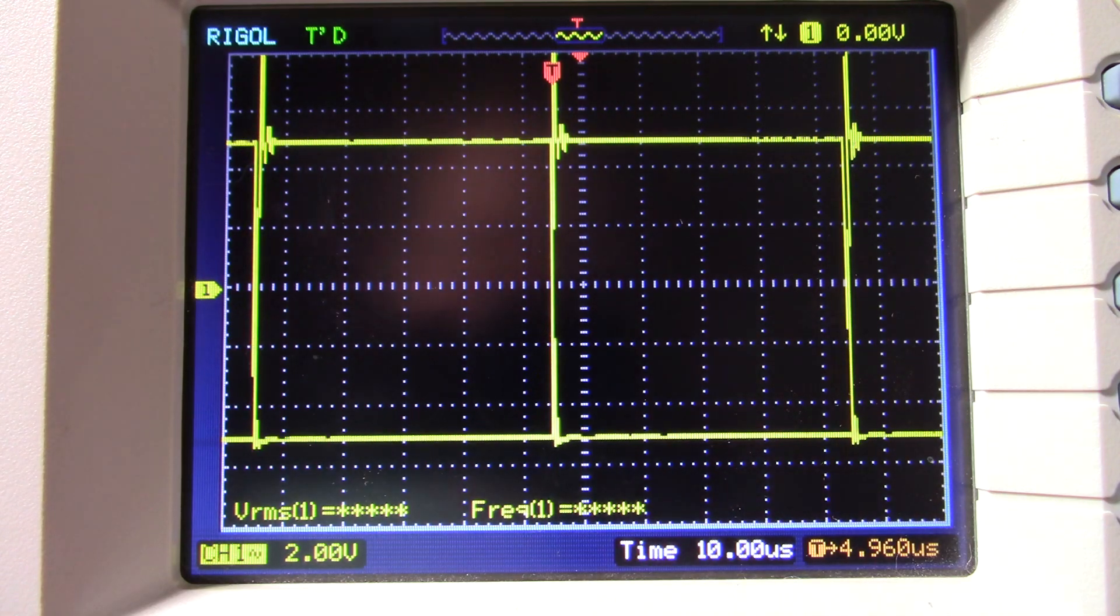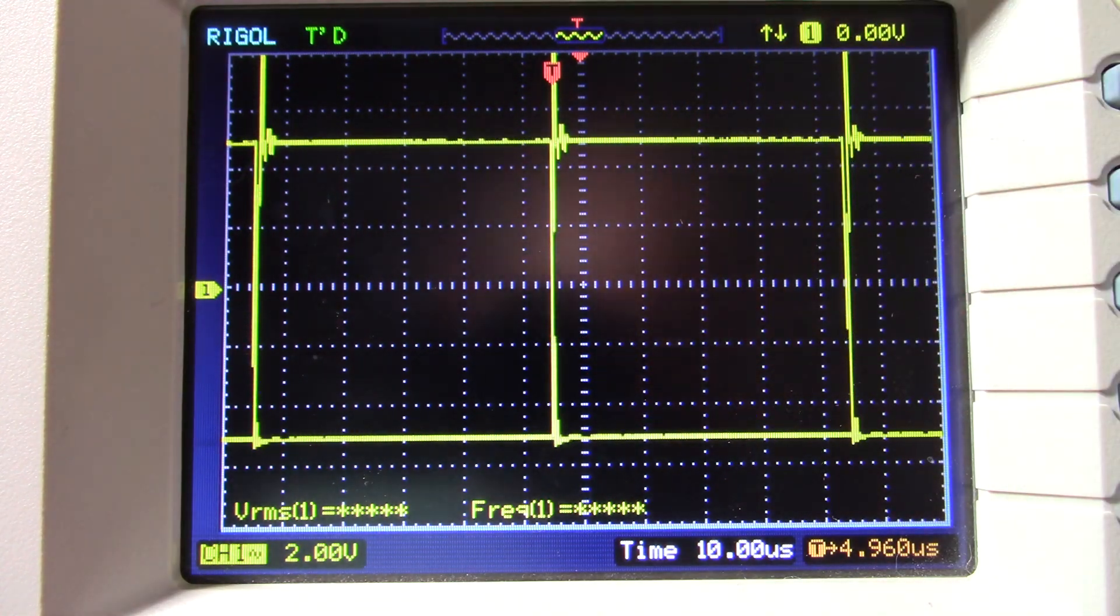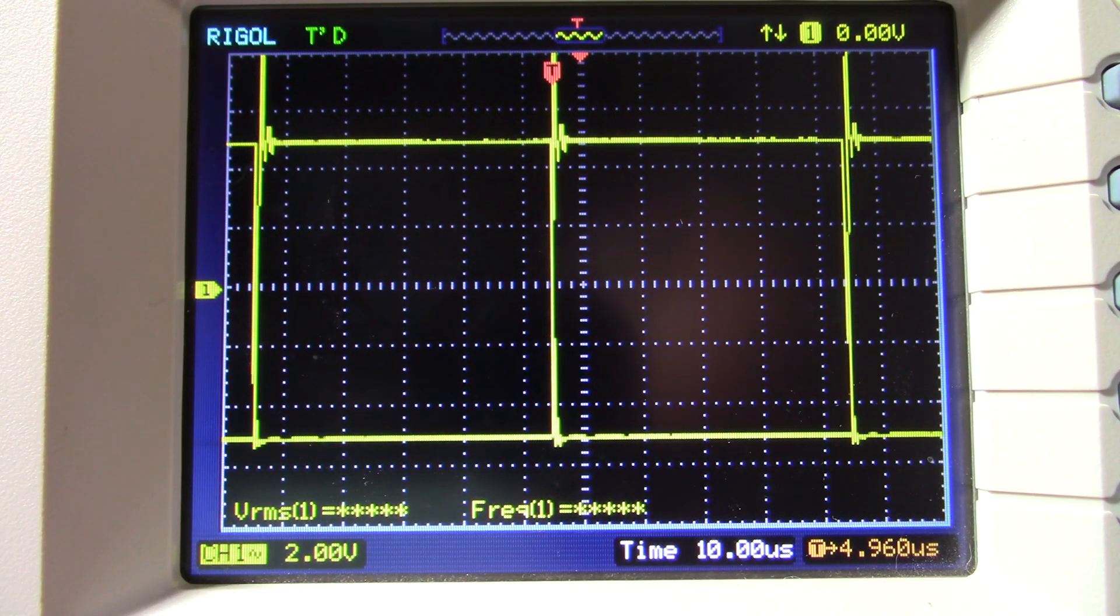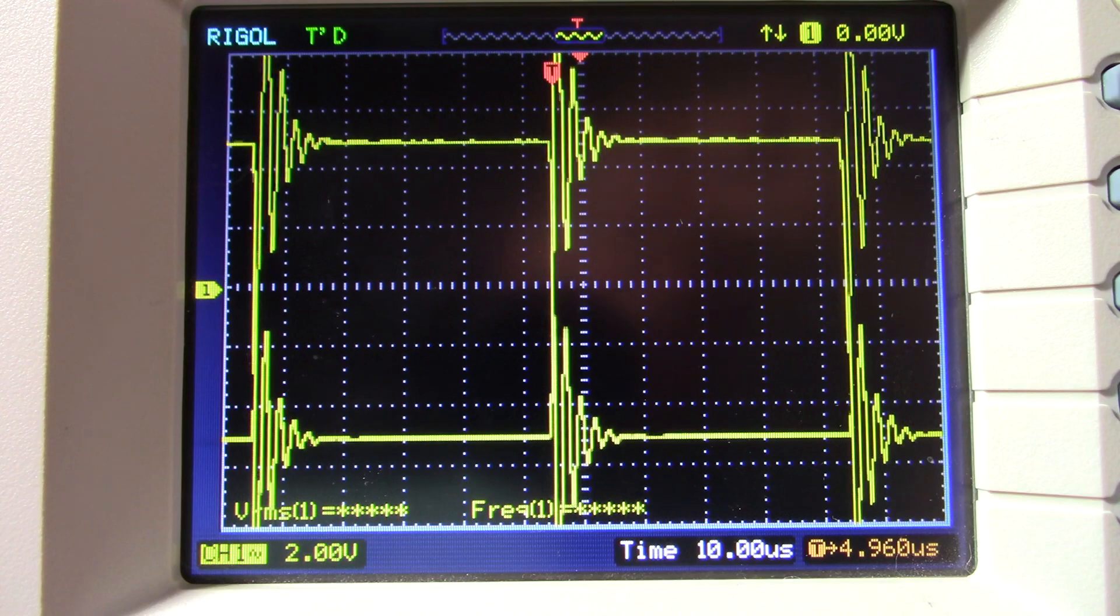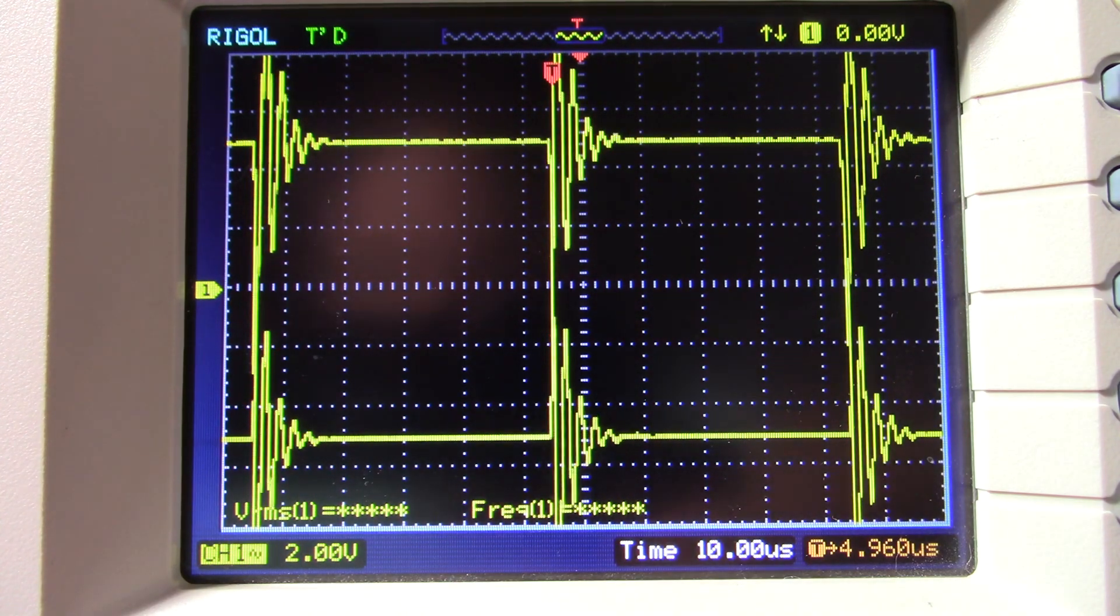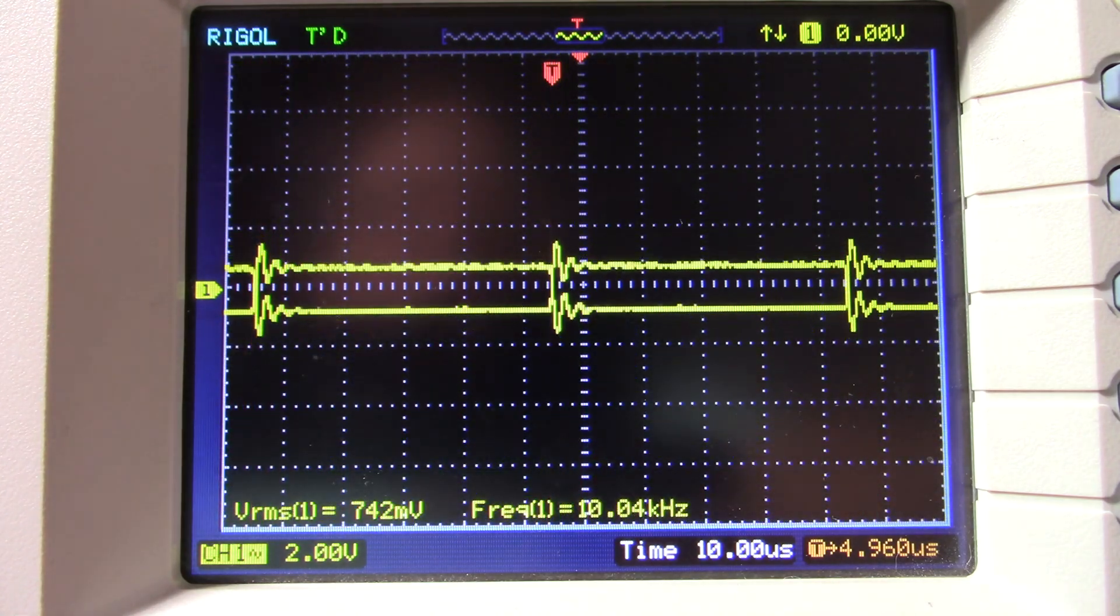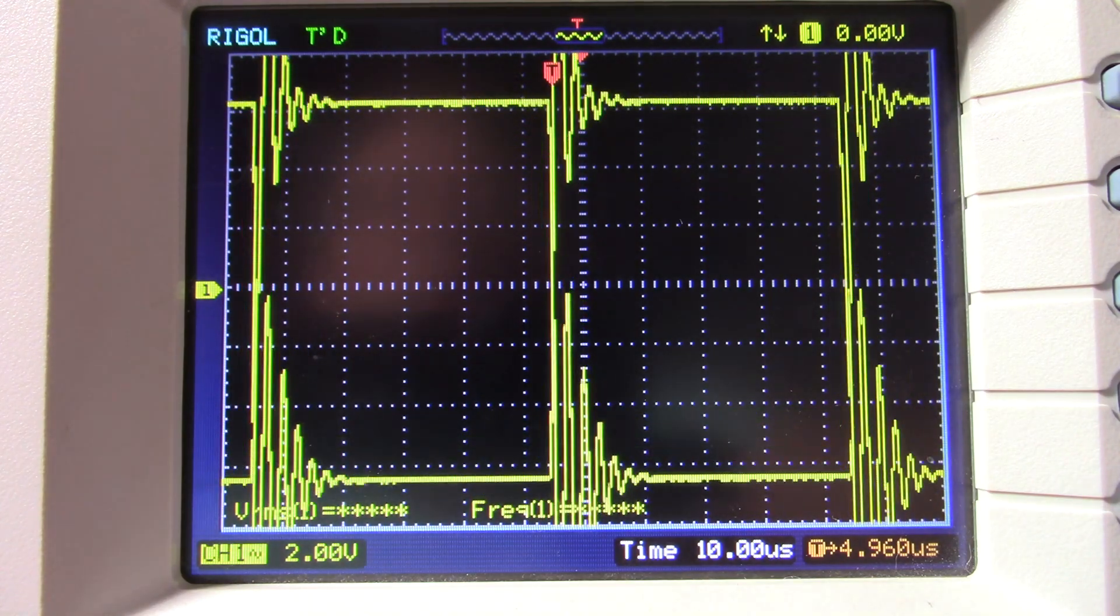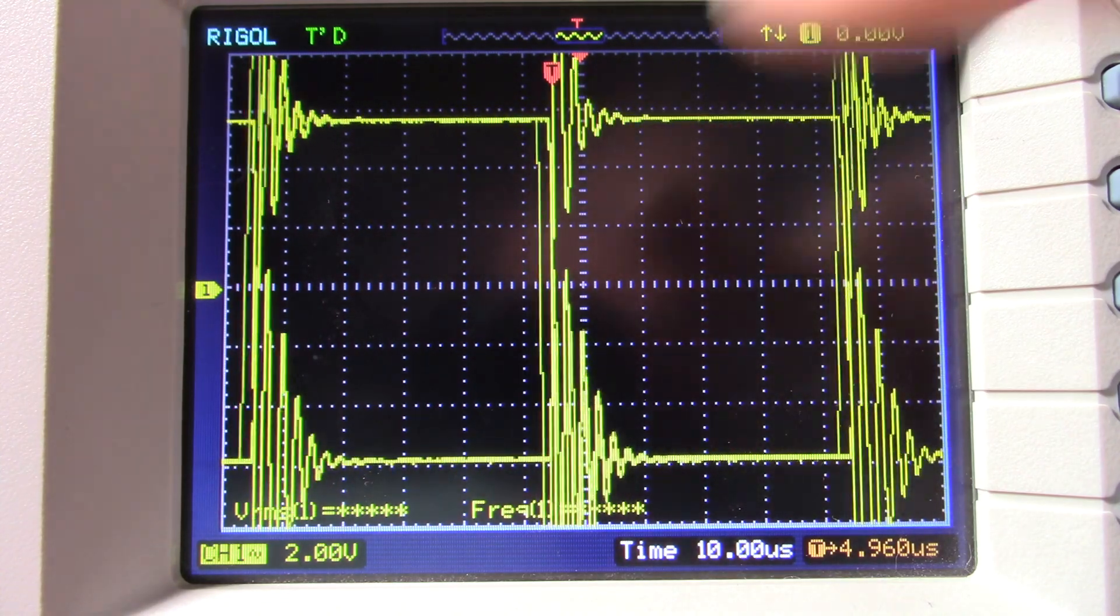However, I would not consider this amplifier to be stable, even in this condition. It's ringing entirely too much. Let me try another thing. Let me vary the signal level here. That might cause it to oscillate at certain different levels. See right here, we're getting a lot of ringing, especially on the bottom.